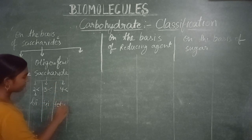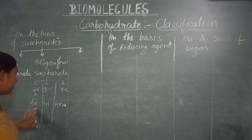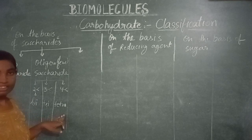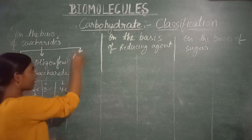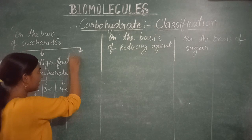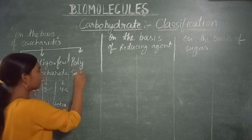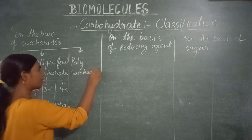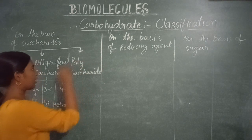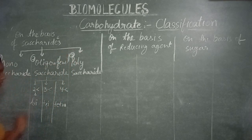So the three main parts are: first, monosaccharides; second, oligosaccharides — divided into disaccharide, trisaccharide, and tetrasaccharide; and third, polysaccharides for more than four units.